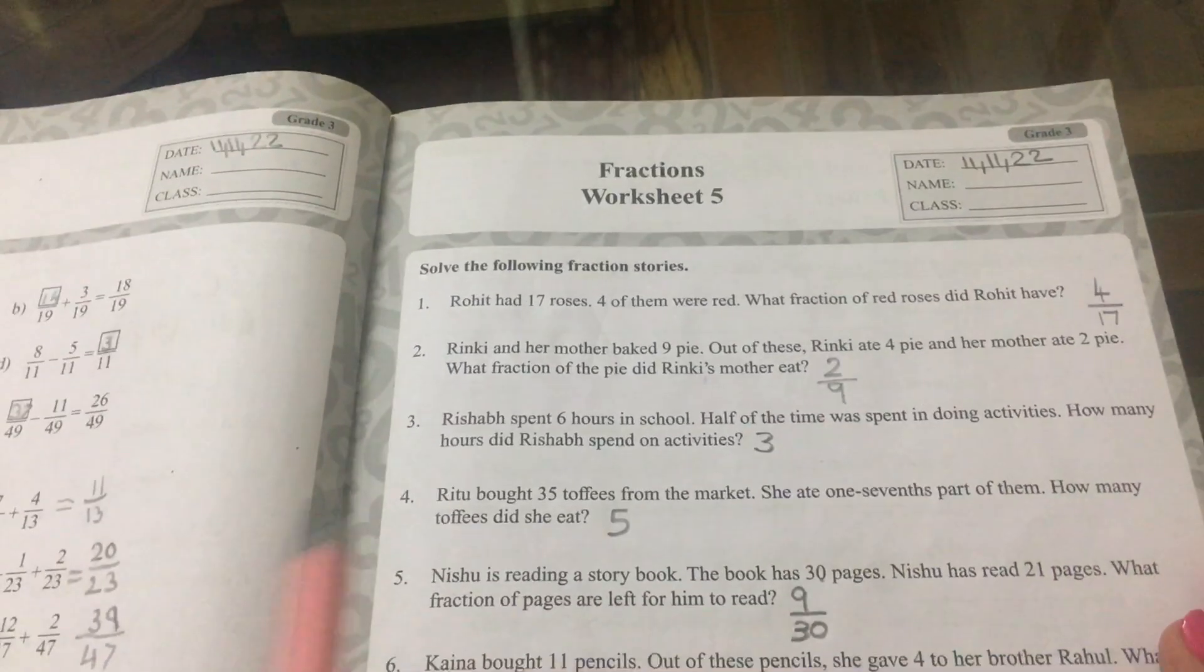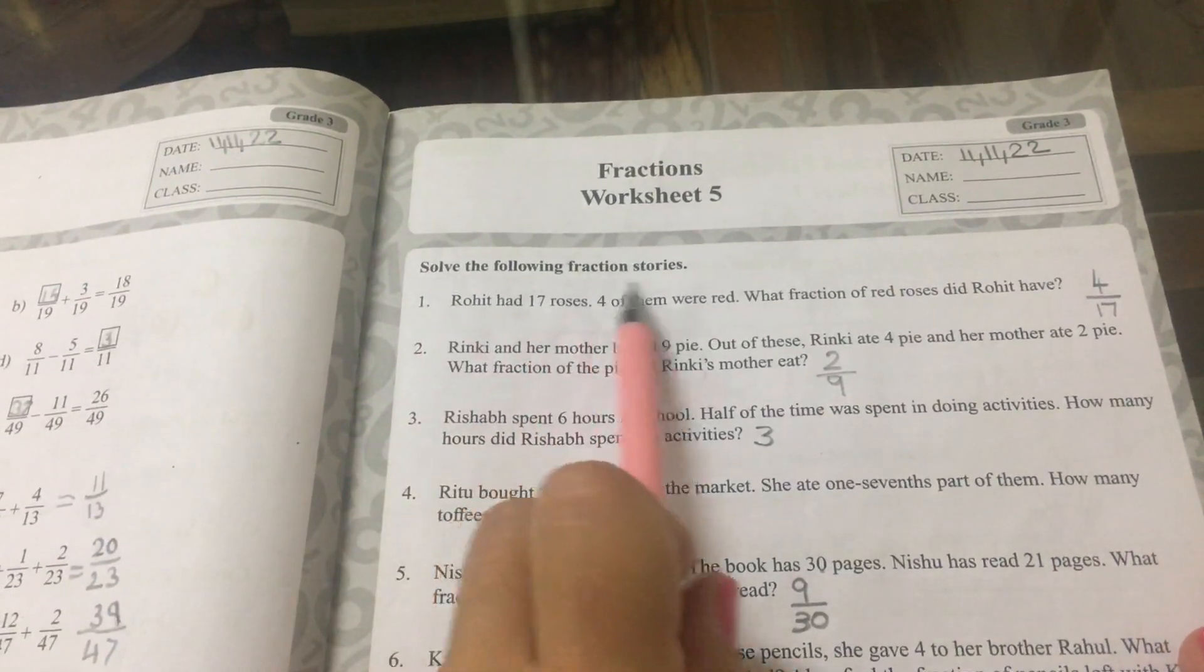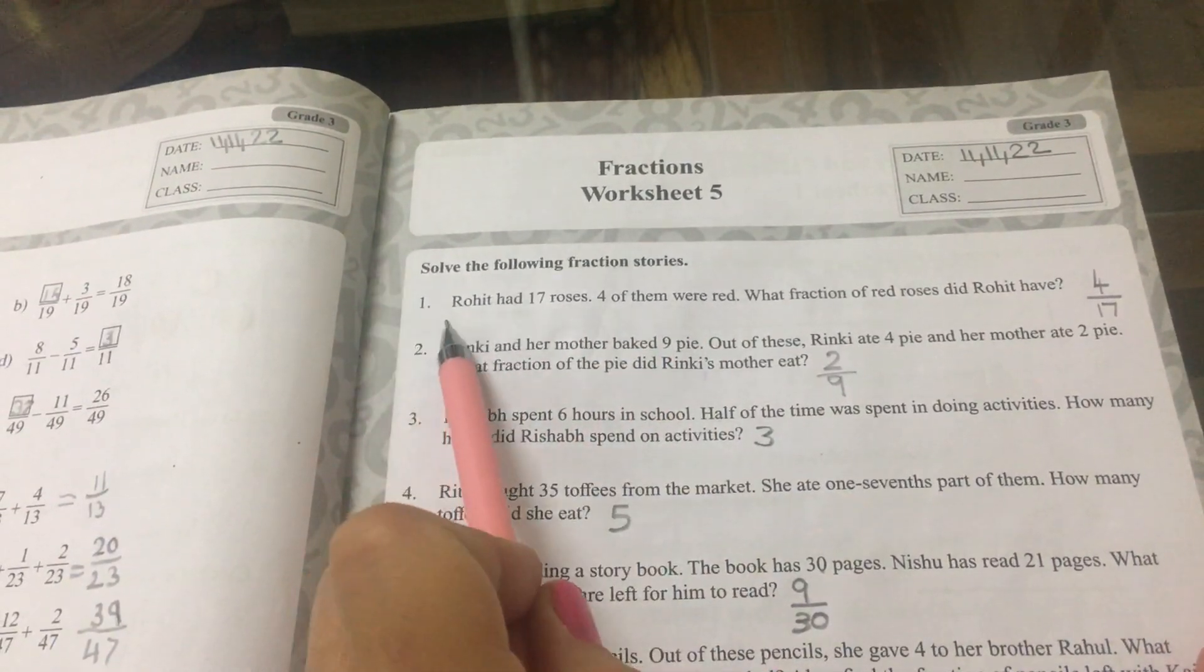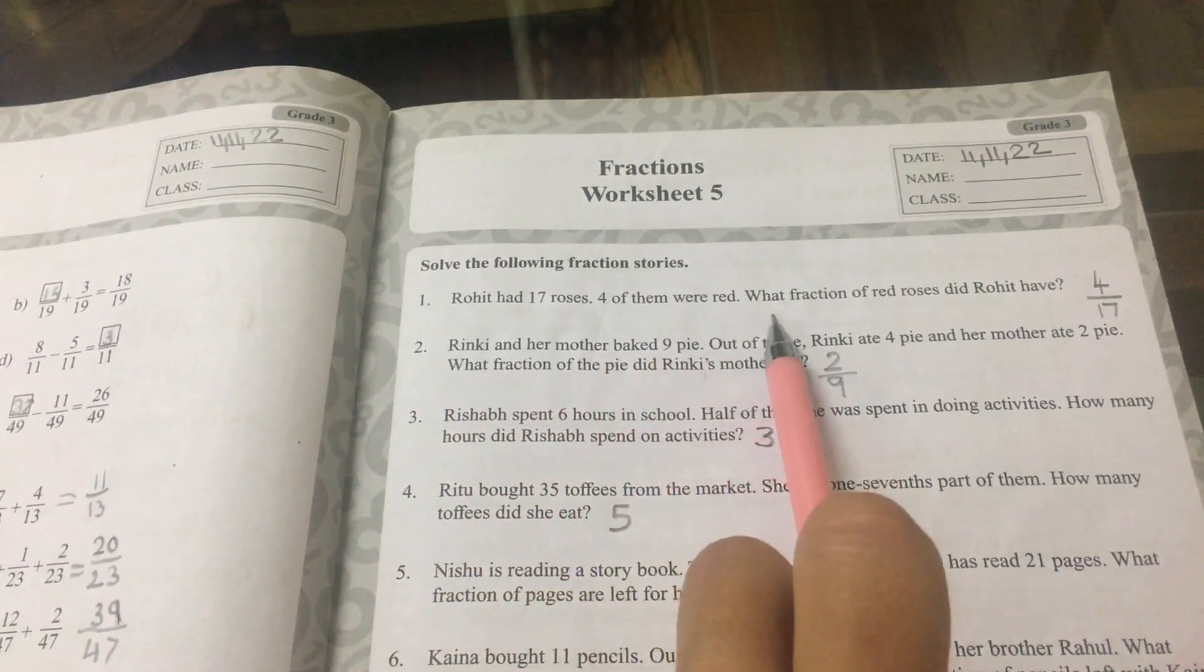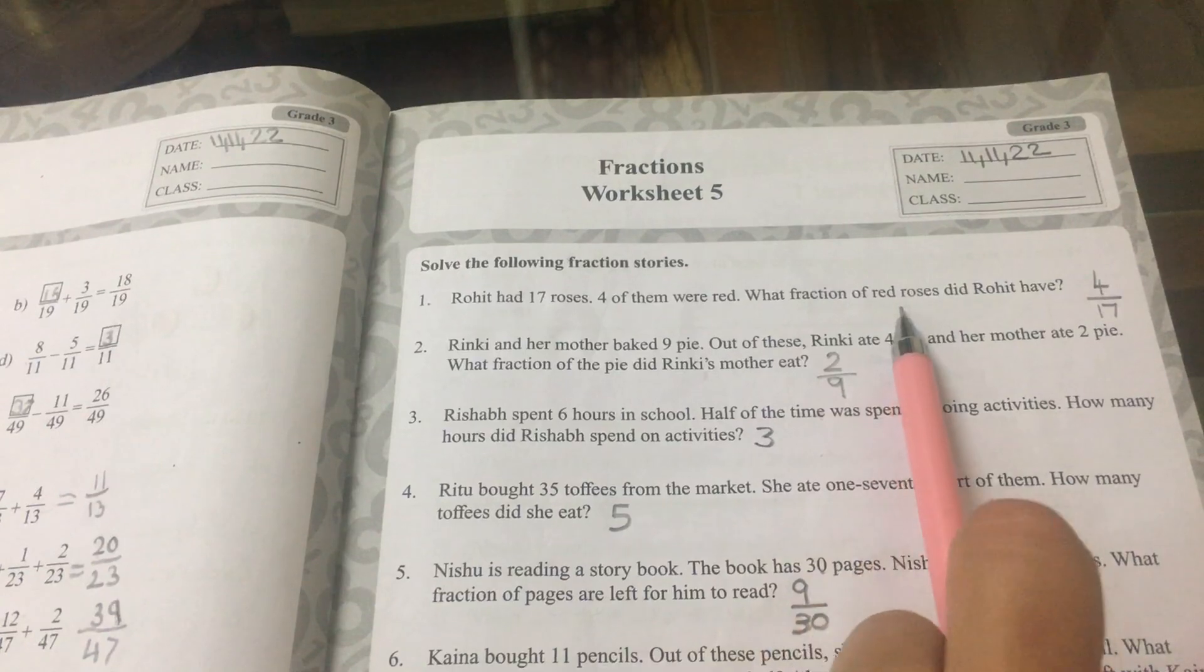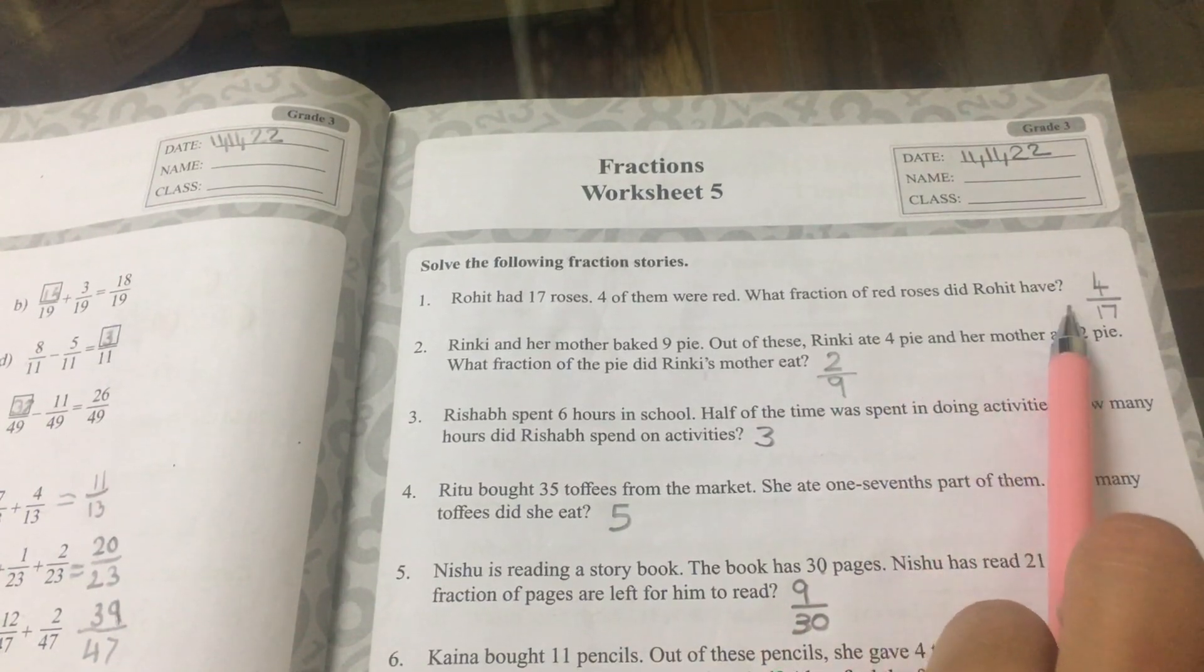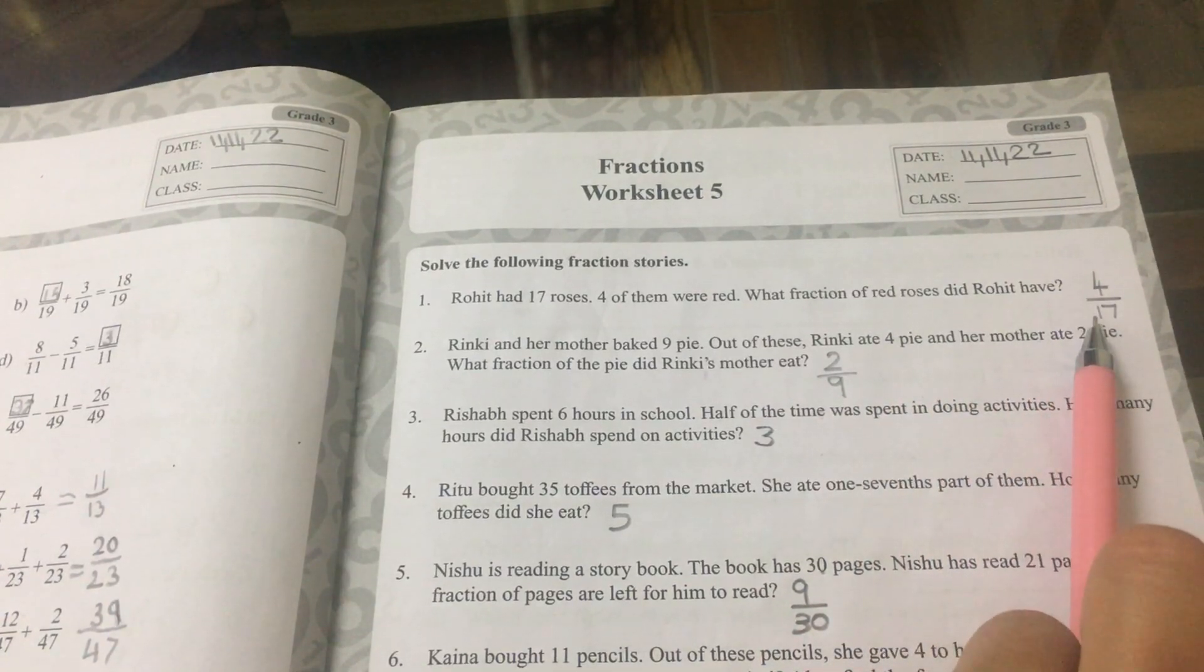Worksheet number 5. Solve the following fraction stories. Number 1. Rohit had 17 roses. Four of them were red. What fraction of the red roses did Rohit have? The answer is 4 seventeenths.